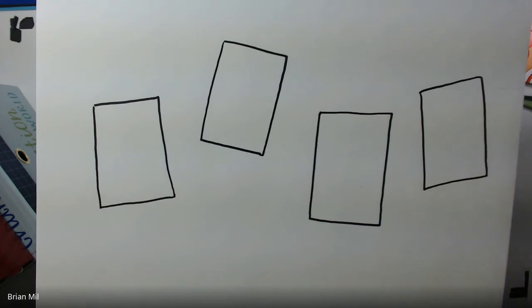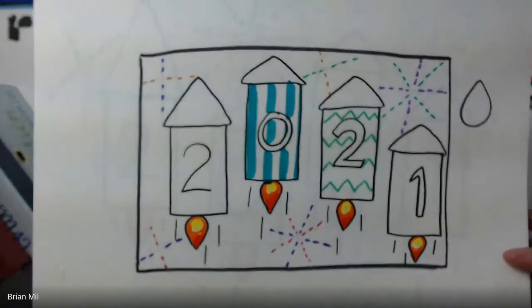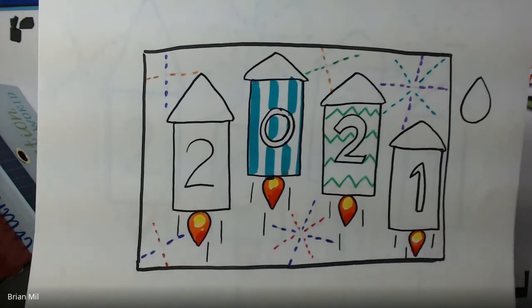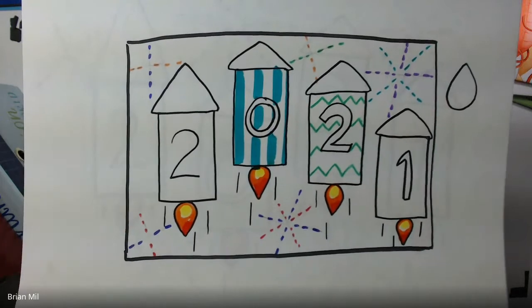Now if you guys are curious, kindergarten did do this project as well. Let me show you guys what kindergarten did. Their rectangles were a little bit closer together. I didn't want to confuse them with being different directions so what they did was they made the rockets completely up and down.